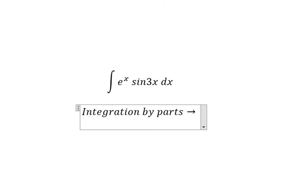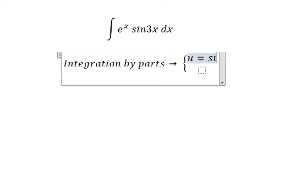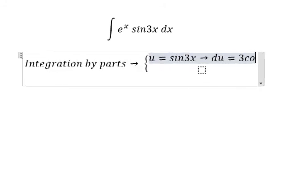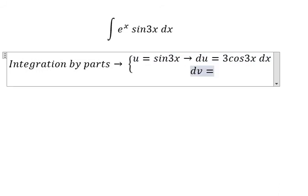We have u equals sin3x, so du equals 3cos3x dx. dv equals e to the power of x dx, and v equals e to the power of x.